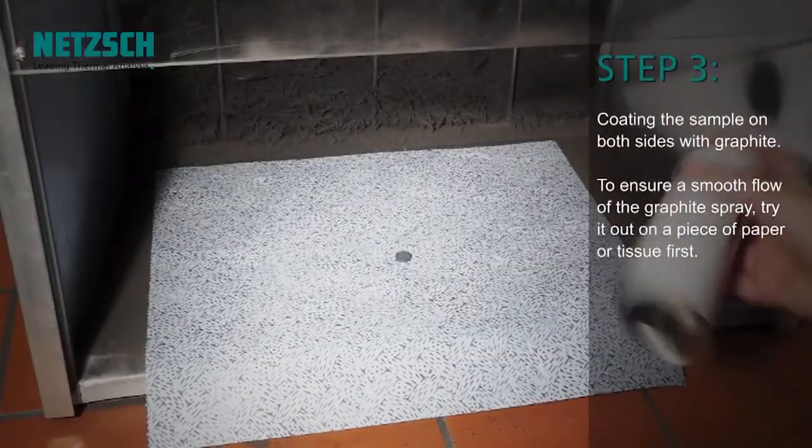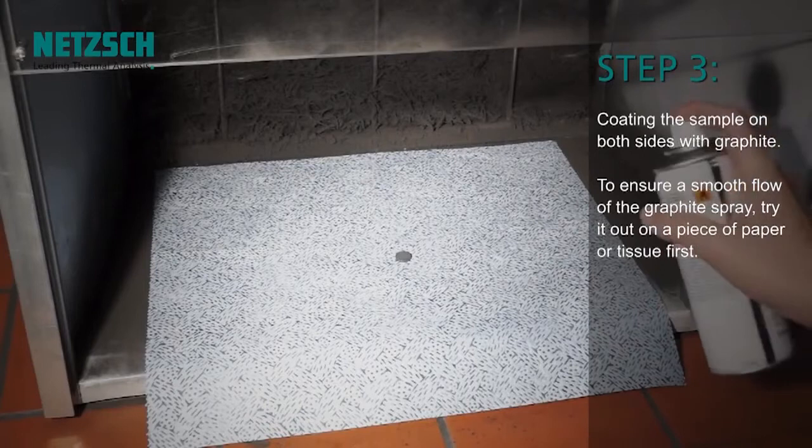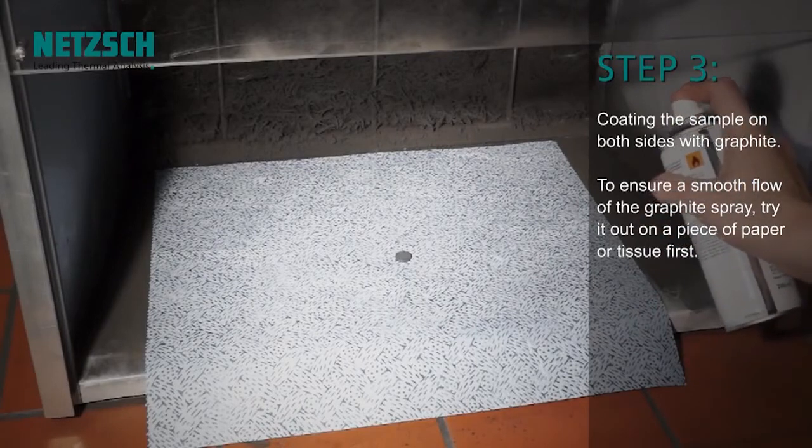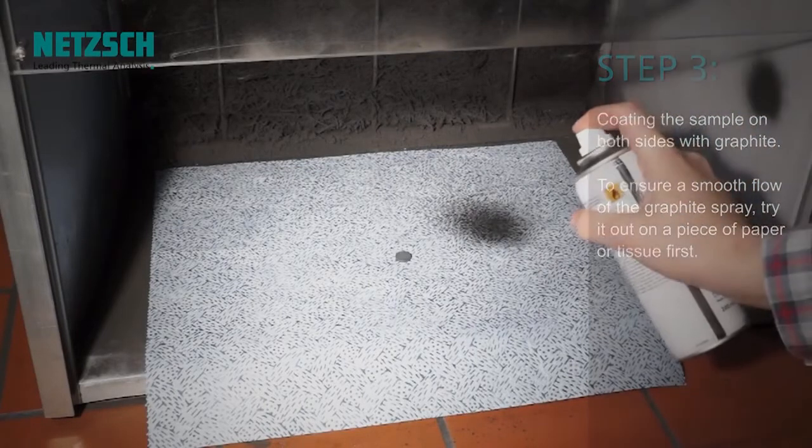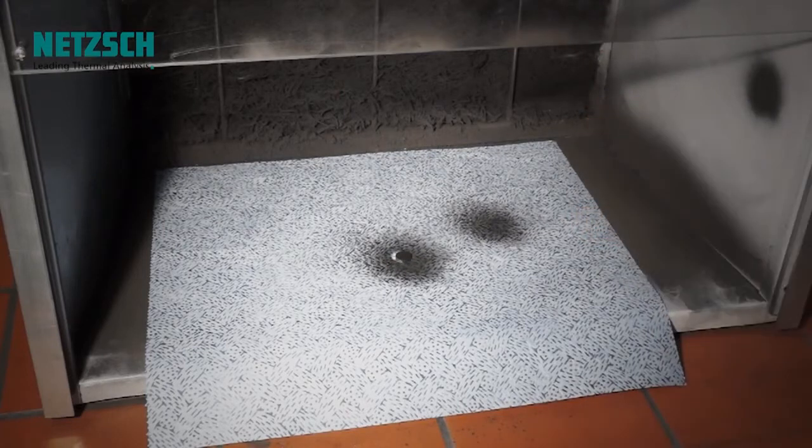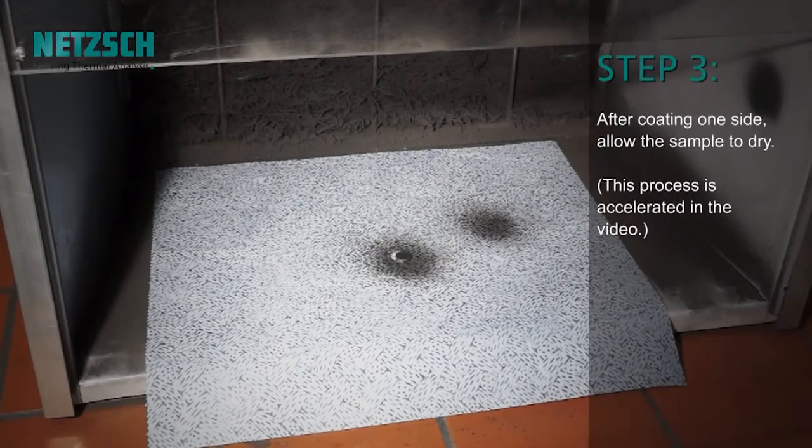Coat the sample on both sides with graphite. To ensure a smooth flow of the graphite spray, dry it out on a piece of paper or tissue first. After coating one side, allow the sample to dry.